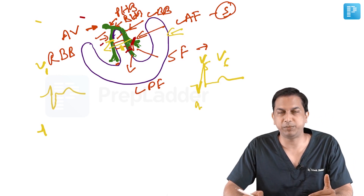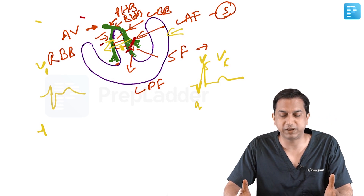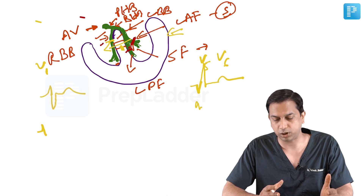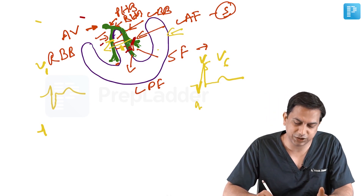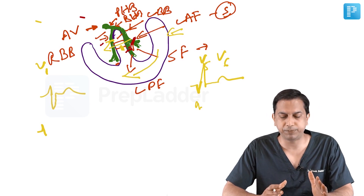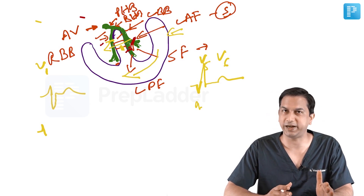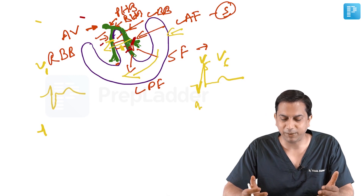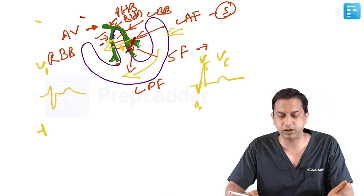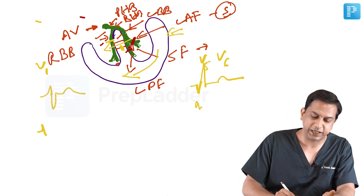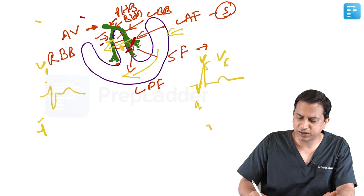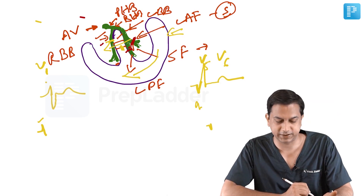Thereafter, there will be depolarization of all the LV. Since the right bundle branch is blocked, the conduction direction will be from left to right, so the terminal deflection will be towards the right side. Initially you will have mid septum depolarization, so you will have an initial R wave in V1 and an initial Q wave in V5 and V6.